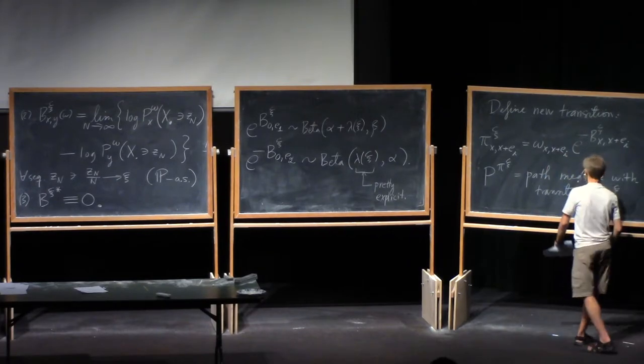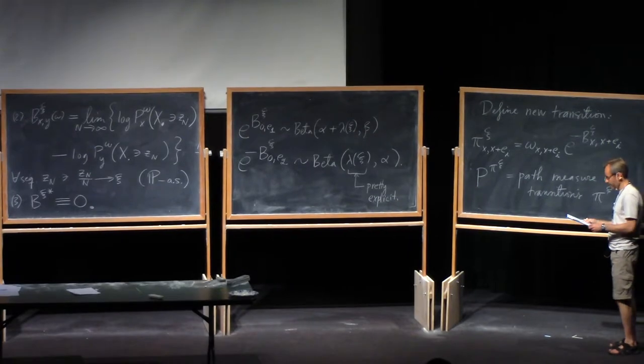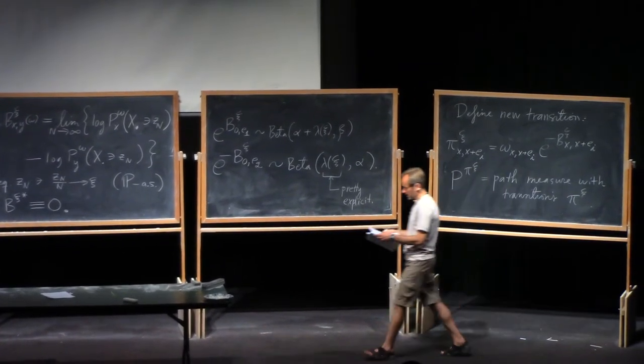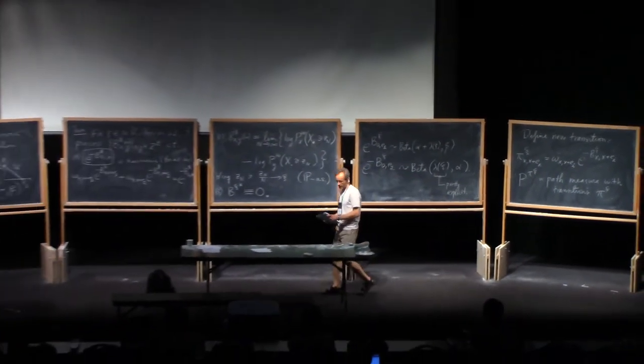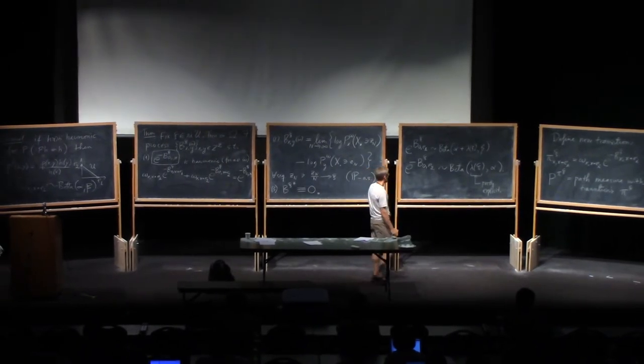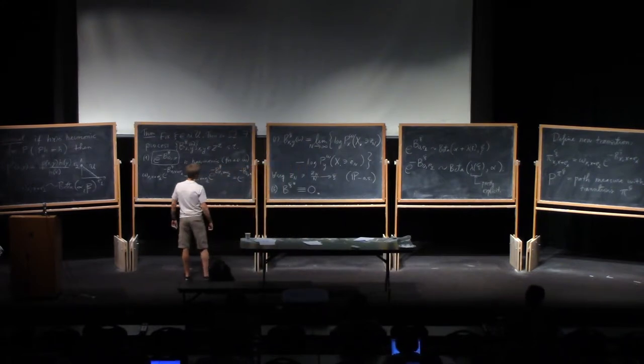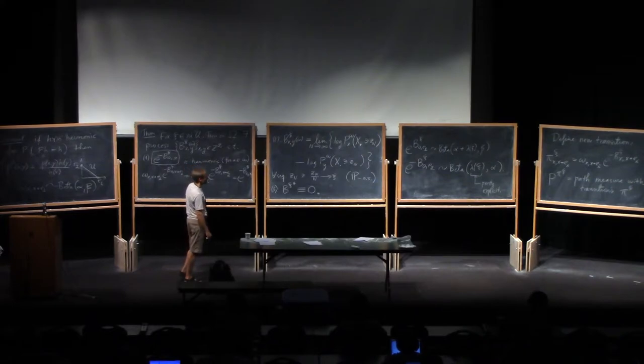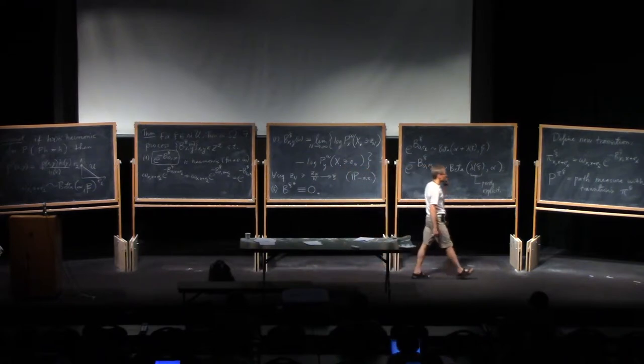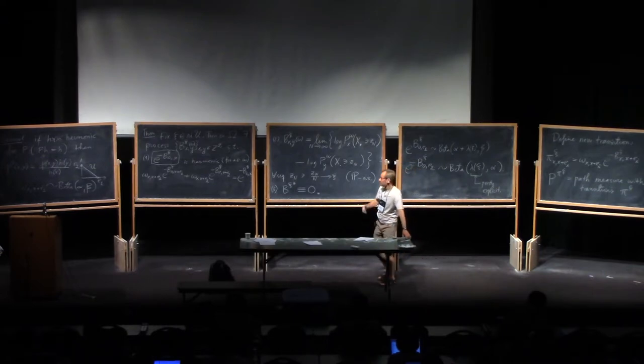Okay, so I have an RWRE now, but in a very correlated environment. What sorts of properties does it satisfy? Well, this transformation that we now did, one of the things it did, it changed the law of large numbers velocity, which seems to have been erased also. So it changed the law of large numbers velocity from the original xi star to this xi. So that already tells us that this new measure is singular to the old one.